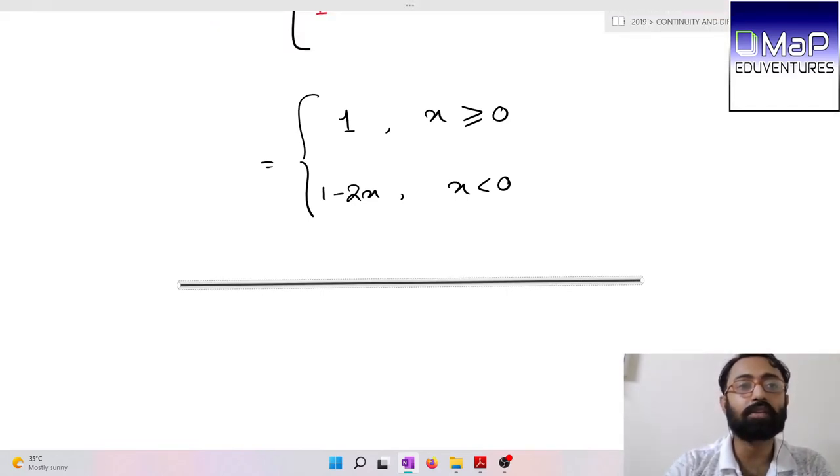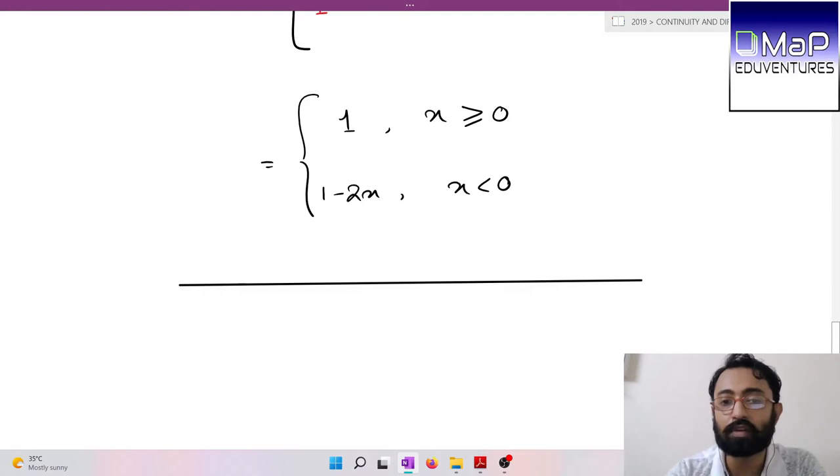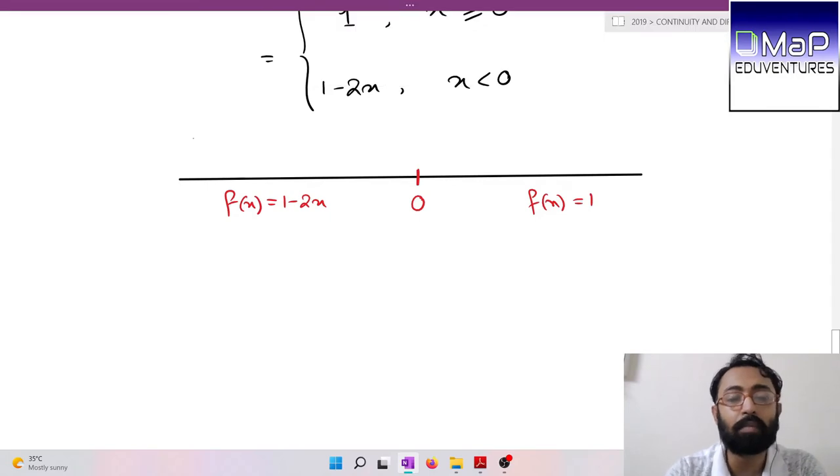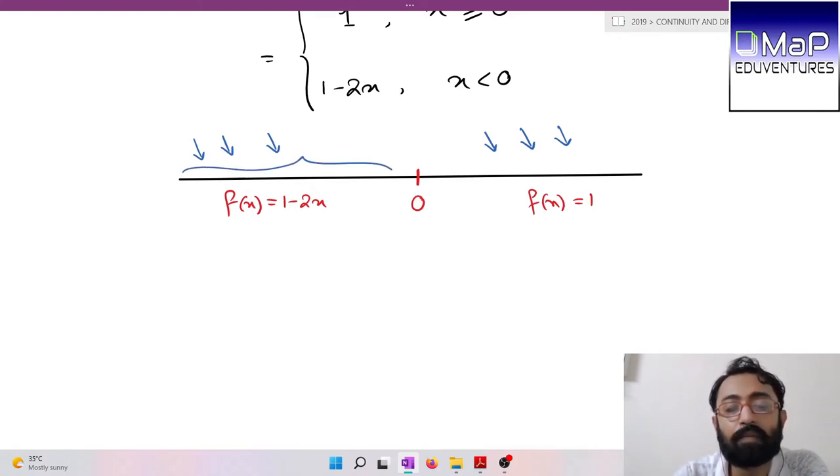So f(x) = 1 when x ≥ 0, and f(x) = 1 - 2x when x < 0. Although the function breaks at the zero point, both parts are continuous. On the left side you get f(x) = 1 - 2x, and on the right side you get f(x) = 1.